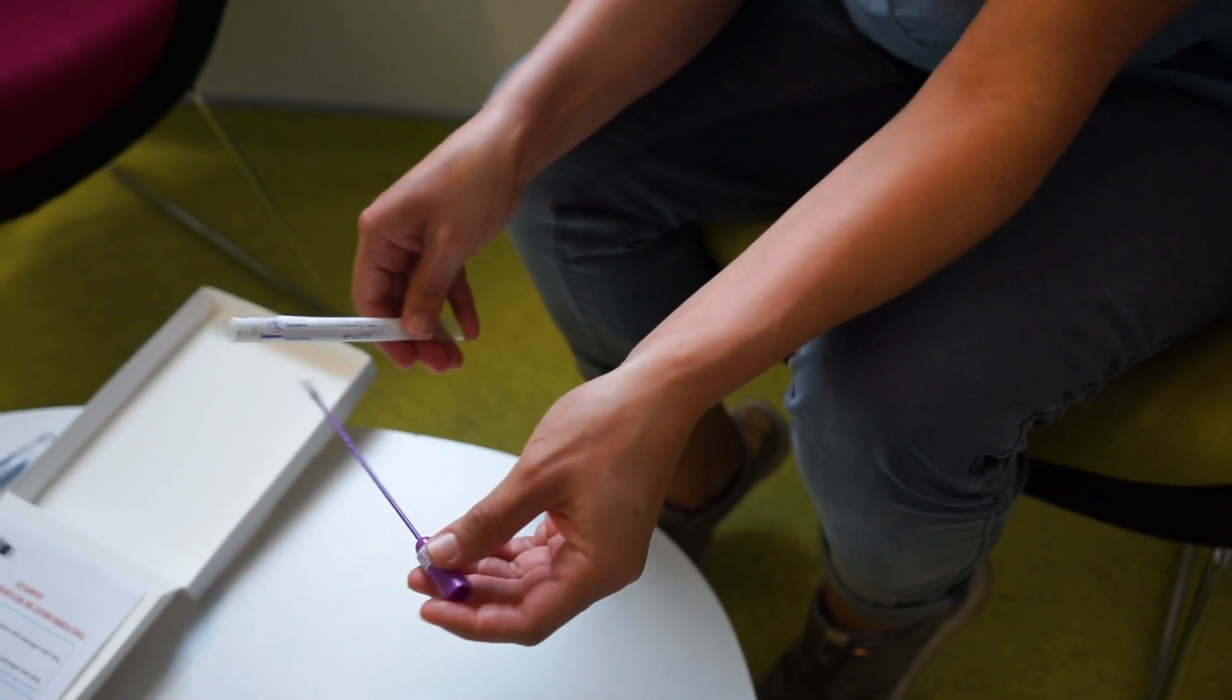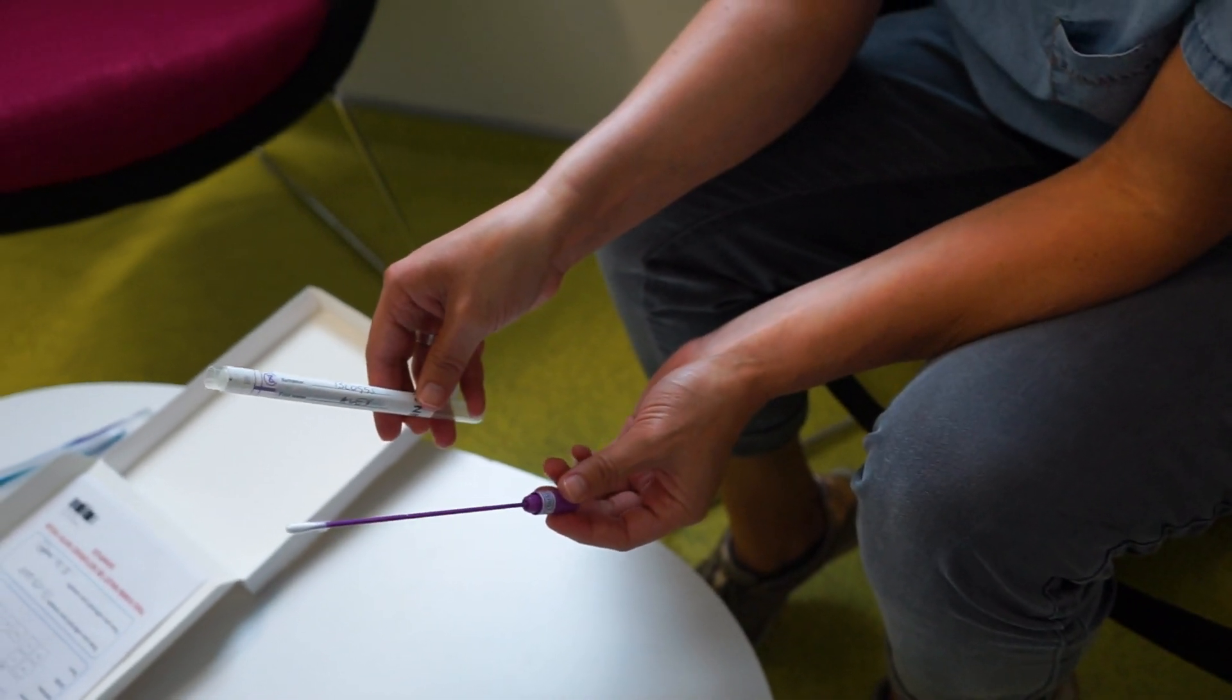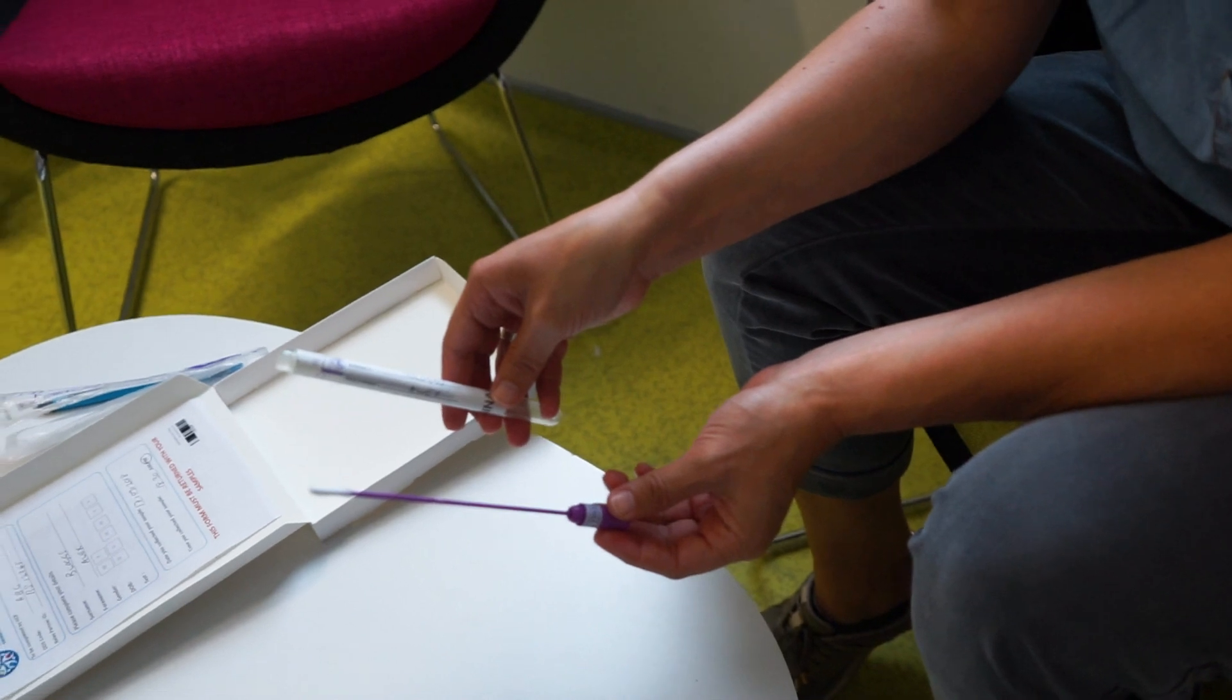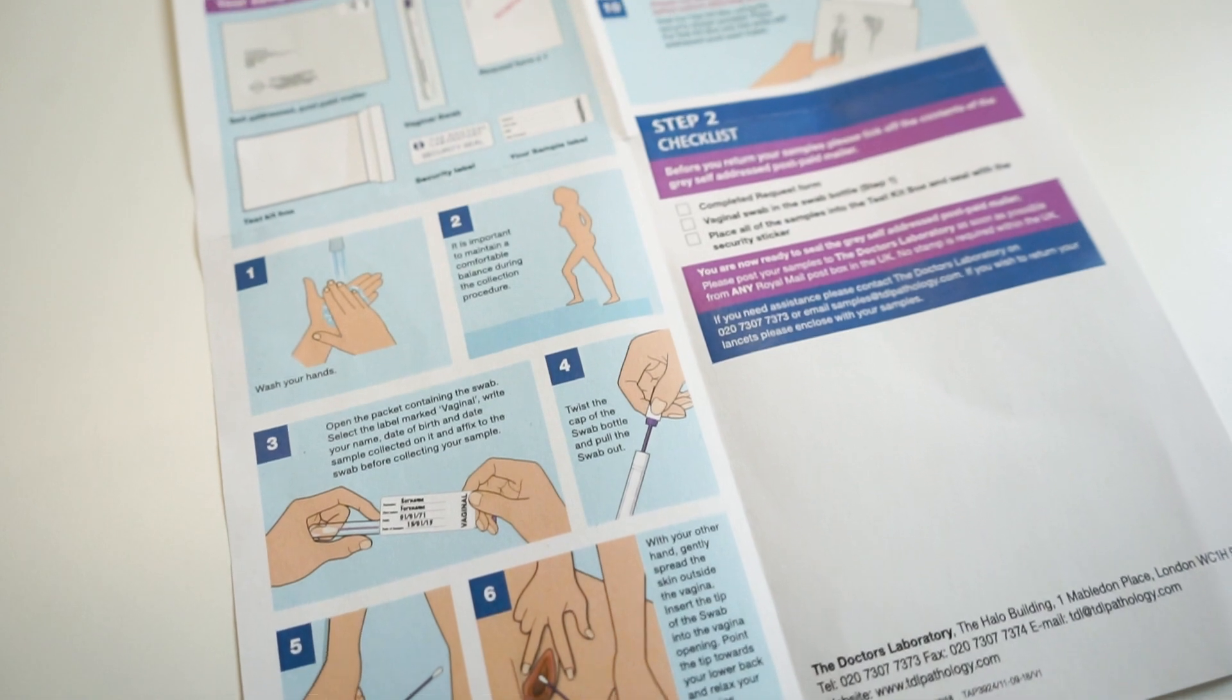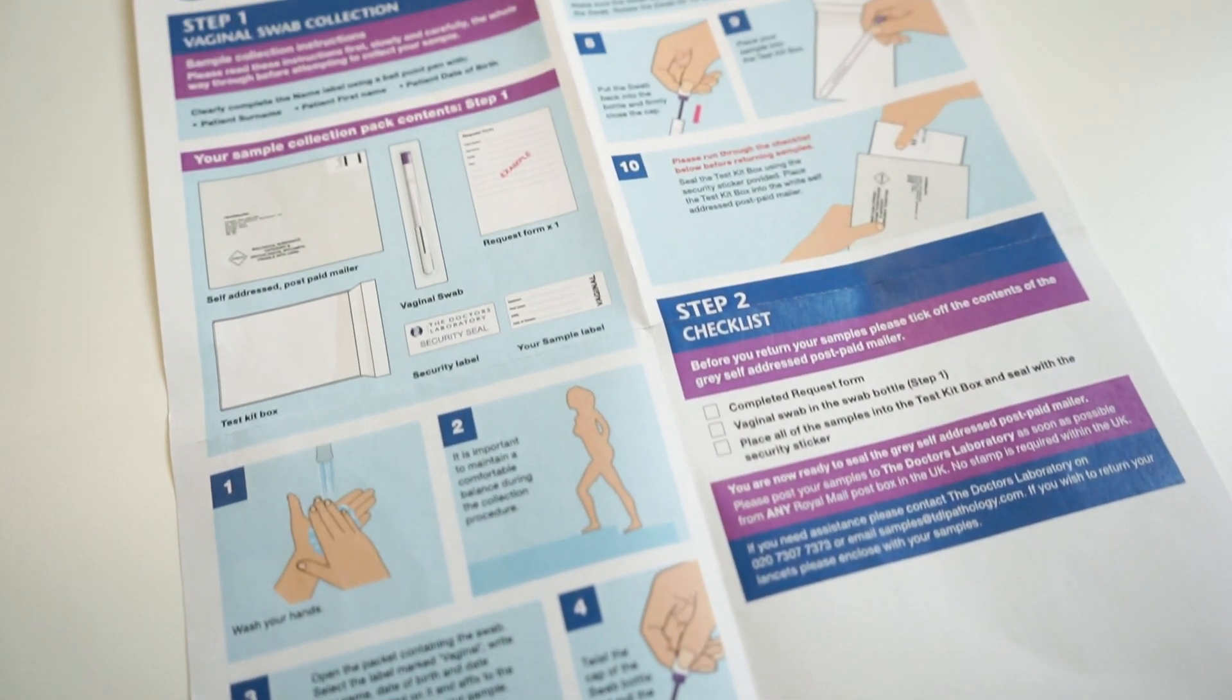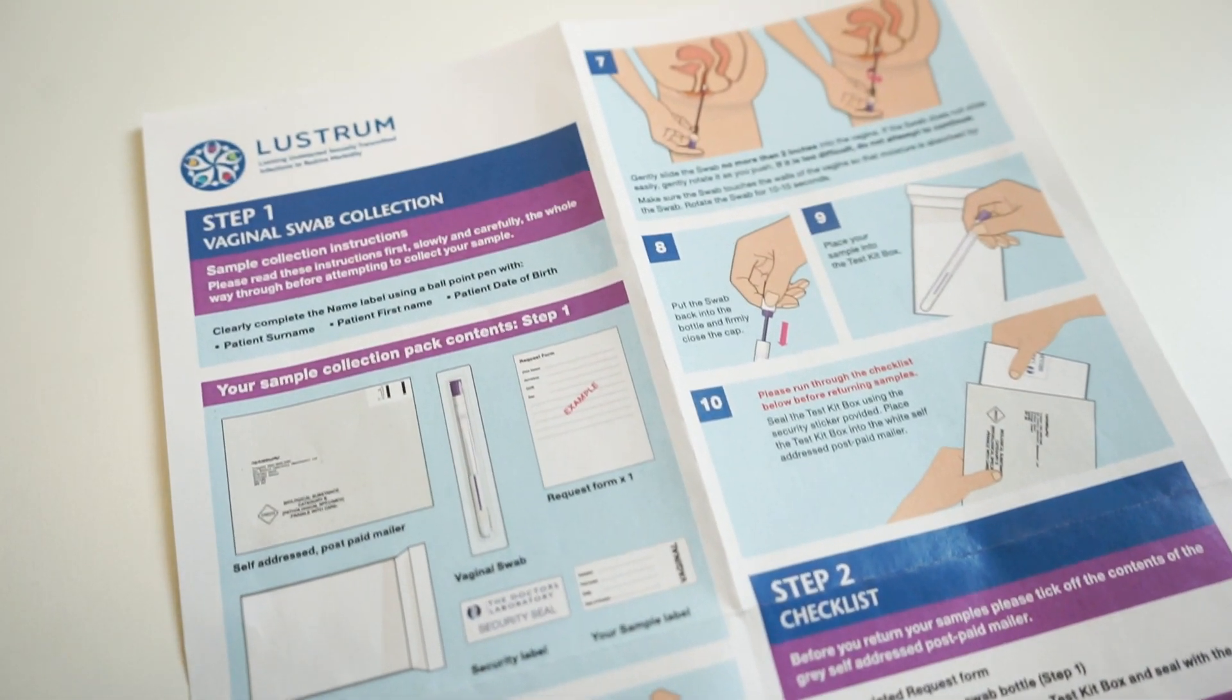With your other hand, gently spread the skin outside your vagina. Insert the tip of the swab into your vagina opening. Point the tip towards your lower back and relax your muscles. Gently slide the swab no more than two inches into your vagina.